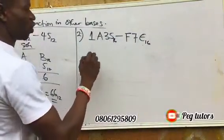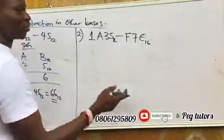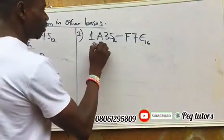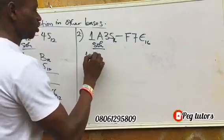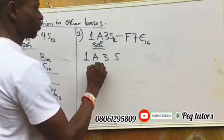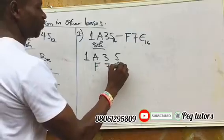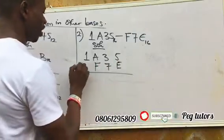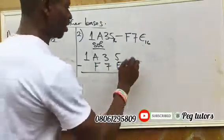How do you work on this? You are asked to subtract this. How do you work on it? Now let us do something about this. You have 1, A, 3, then 5, you have to subtract F, 7, E. How do we work on it? Now let us start.